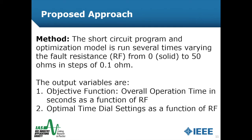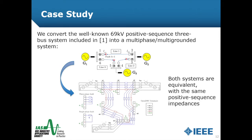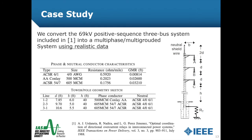The process to validate the optimization approach involves running the optimization model several times, varying fault resistance from 0 to 50 ohms in steps of 0.1 ohm. The output variables are the objective function to assess speed and the optimal time dial settings (TDS) to observe variation due to fault resistance. We used the well-known 69 kV positive-sequence 3-bus system from reference 1 and converted it into a multi-phase multi-grounded system using OpenDSS, with both systems being equivalent in terms of positive-sequence impedances.